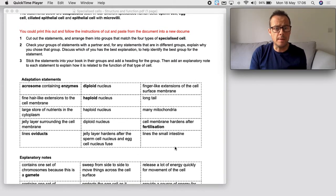So the adaptation statement is an acrosome containing enzymes. So you need to go back through your understanding and think which cell contains the acrosome. Is it the sperm? Is it the egg? Is it the ciliated epithelial cell? Or is it the epithelial cell with microvilli?